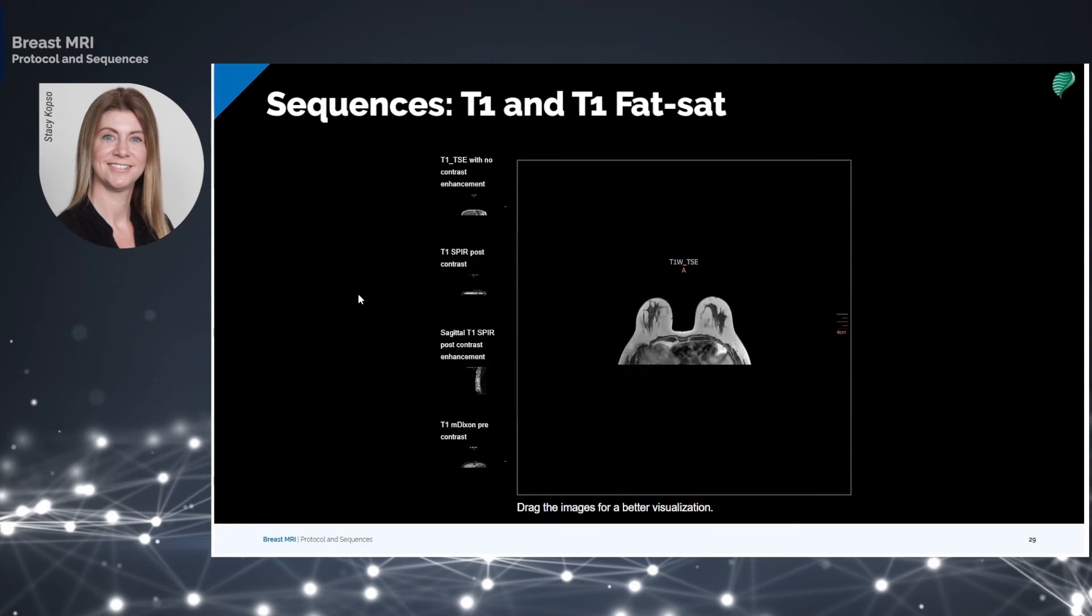T1-weighted imaging is performed with or without fat suppression, as well as before and after contrast media administration. T1-weighted images are useful for evaluating enhanced areas. T1 fat suppressed images are also done in the sagittal orientation.